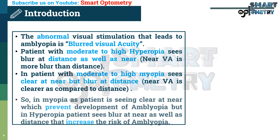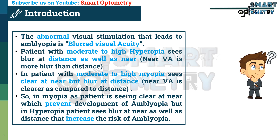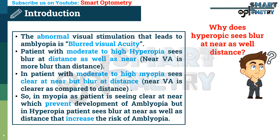In myopia, as the patient sees clearly at near, this prevents the development of amblyopia. But in hyperopia, the patient sees blur at near as well as distance, which increases the risk of amblyopia. Now the question is: why does a hyperopic patient see blur at near as well as distance?